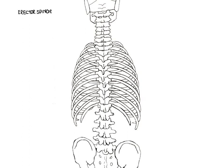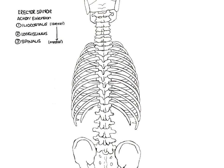We're now going to start drawing the erector spinae group. As the muscle name suggests, these muscles erect the spine, so their prime movement is extension. The erector spinae can be divided into the iliocostalis, the longissimus, and the spinalis — arranged lateral to medial. In addition to extension, they also ipsilaterally laterally flex and ipsilaterally rotate. Collectively they are supplied by the dorsal rami of the spinal nerves.